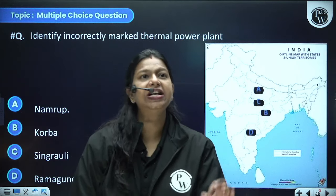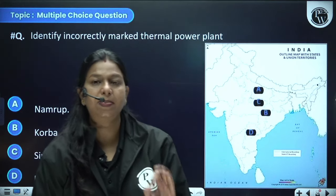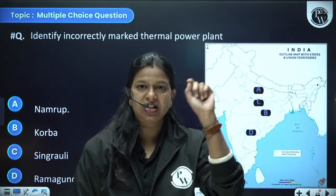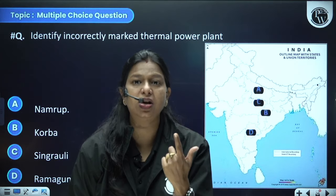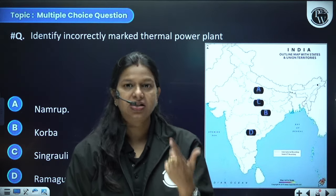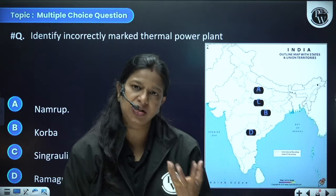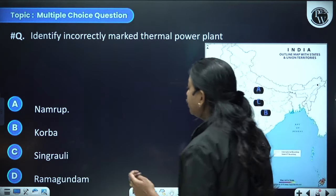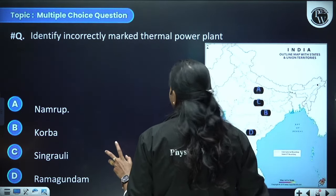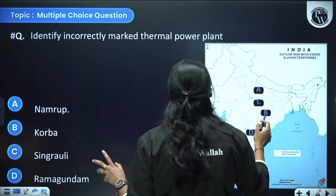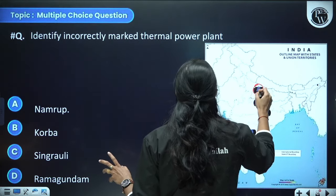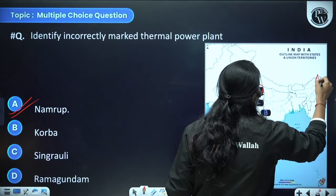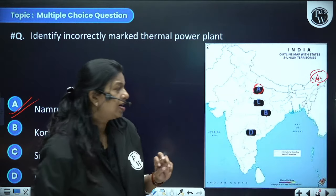Identify the incorrectly marked thermal power plant. Make sure you know where thermal and especially nuclear power plants are located — they are asked frequently. Options are Namroop, Korba, Singrauli, and Ramagundam. Namroop is incorrectly marked — its correct location is in Assam, on the borders of Assam and Arunachal Pradesh. Also, which nuclear plant is situated in Tamil Nadu — Narora, Kakrapar, Tarapur, or Kalpakkam? Kalpakkam is situated in Tamil Nadu.